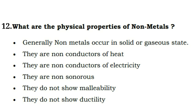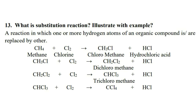Next question: what are the physical properties of non-metals? Generally, non-metals occur in solid or gaseous states. They are non-conductors of heat and electricity. They are non-sonorous. They do not show malleability and ductility. Only graphite is an exception, as it shows a lustrous nature and conducts electricity.